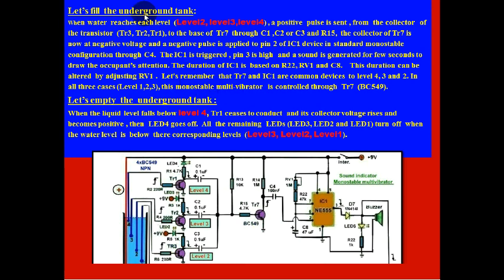Now, let's assume that the underground tank is full of water. So when water reaches the level, level 2 or 3 or 4 in this here, a positive pulse is sent from the collector of the transistor to the base of TR7 through either C1 or C2 or C3 and R14. The collector of TR7 is now at negative voltage, and a negative pulse is applied to pin 2 of IC1 device in standard monostable configuration.